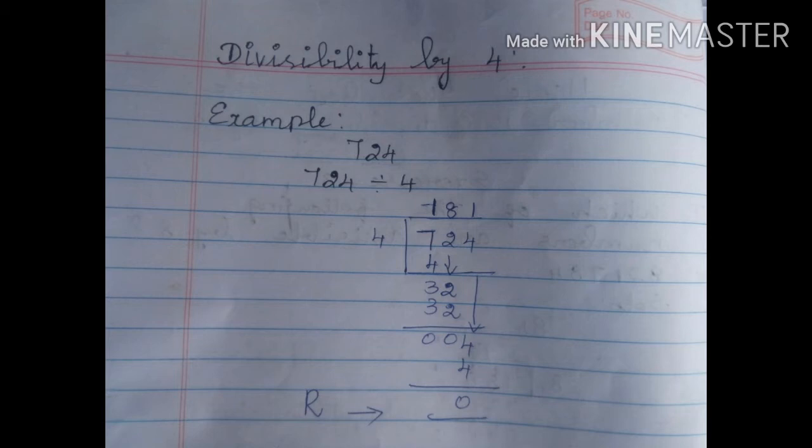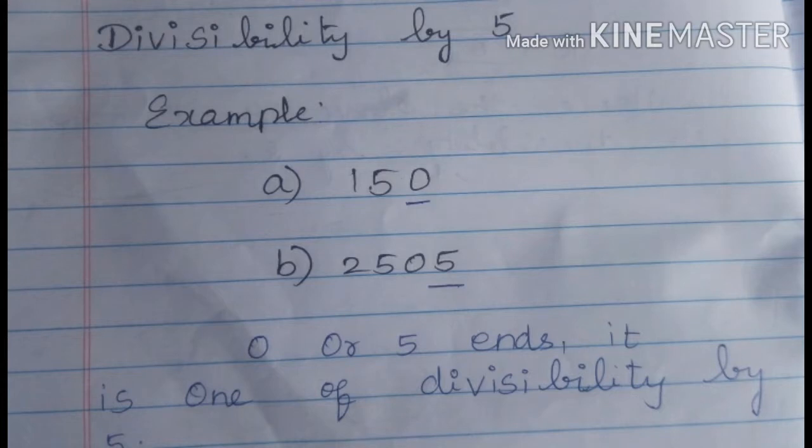Next, divisibility by 5. A number is divisible by 5 if it ends in 0 or 5. It is very easy. If it ends in 0 or 5, it is divisible by 5.